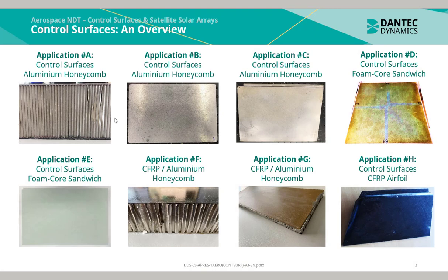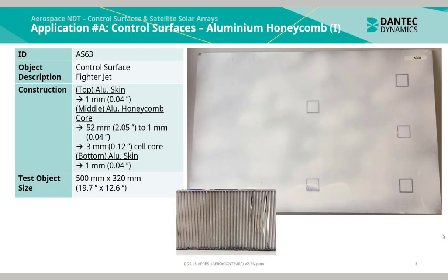Some of the applications include aluminum honeycomb, foam core sandwich constructions, hybrid honeycomb using carbon fiber reinforced plastic laminate and aluminum honeycomb, and also carbon fiber reinforced plastic laminate. This aluminum honeycomb sample is an aileron of a fighter jet.